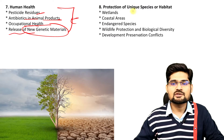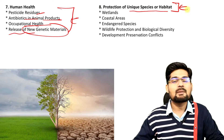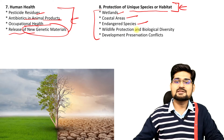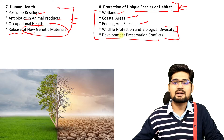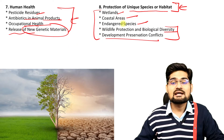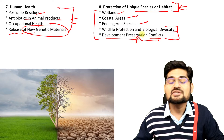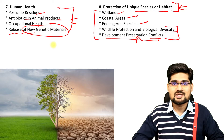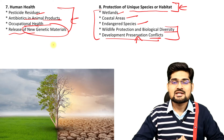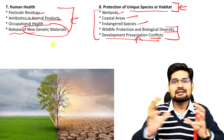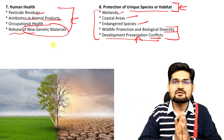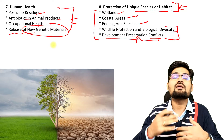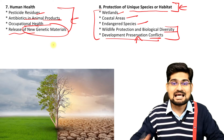Further, there is the protection of unique species or habitat — biodiversity conservation. Rural areas are very important here. Wetlands, coastal areas, endangered species and several factors related to biological diversity conservation, as well as development-preservation conflicts. We keep observing that some animal has entered a village — some leopard has entered a village. So there is increasing conflict between humans and wild animals in rural areas.